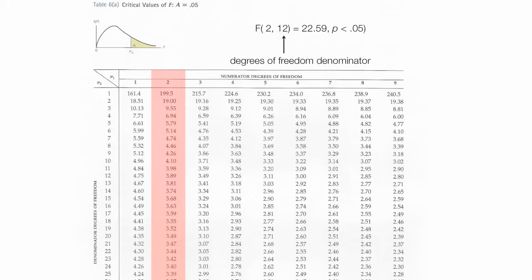The second value we look up is the 12, and that's the degrees of freedom of the denominator, and it's row 12. So I'll just fill that in right there. And where they intersect is the critical value, and in this case it's 3.89.